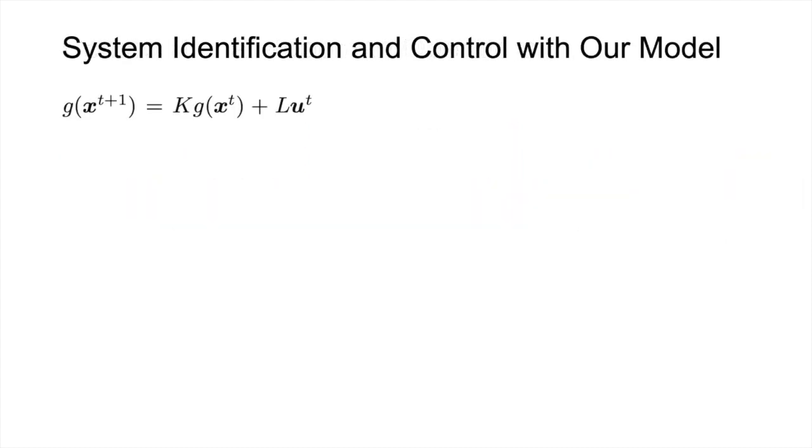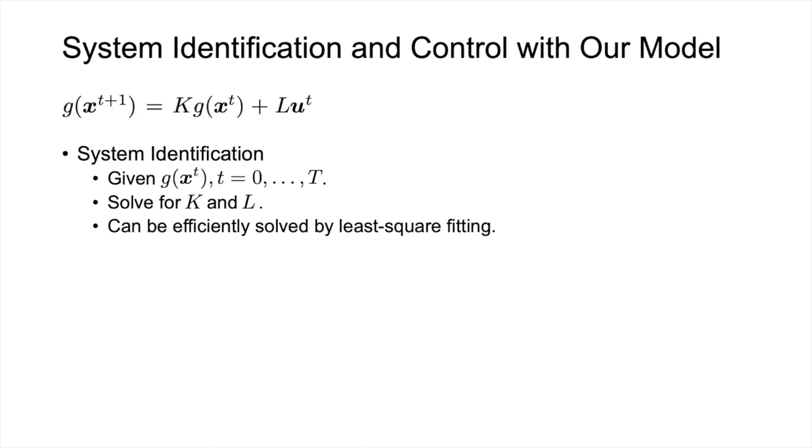Using the learned linear dynamics, we can perform system identification and control very efficiently. When adapting to a new system with different physical properties, we just need to solve for the coefficient K and L. Given observed data X, this can be easily done by least square fitting.